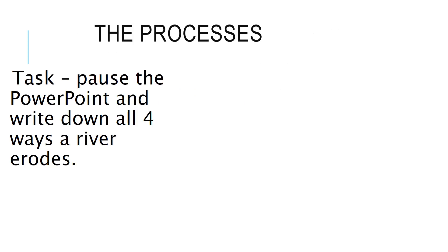Now, the processes. Last week we talked about erosion. I'd like you to pause the video and give yourself three minutes to write down the four ways in which a river erodes. It's good to name them, but it's even better to explain what actually happens — so see if you can do both.